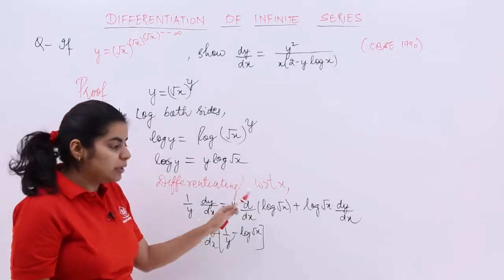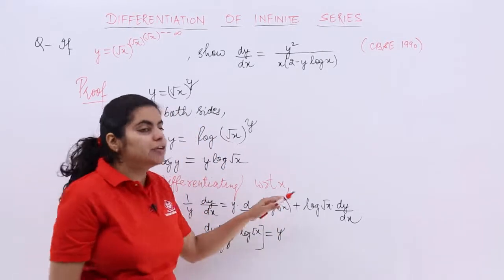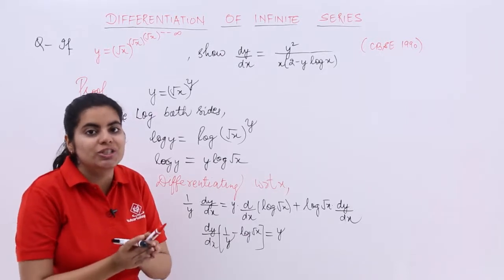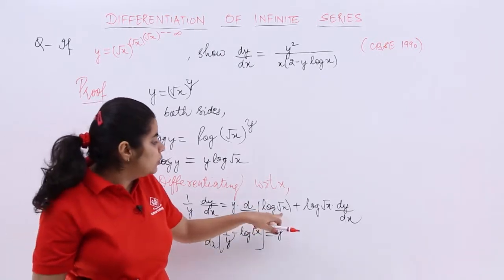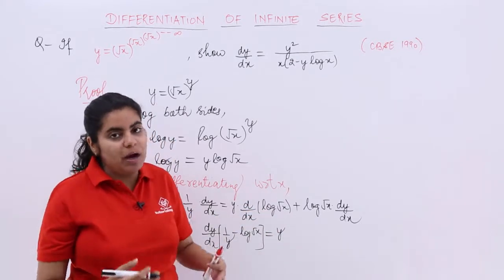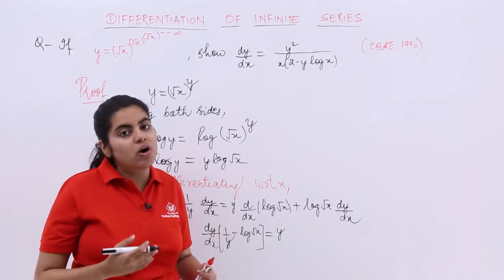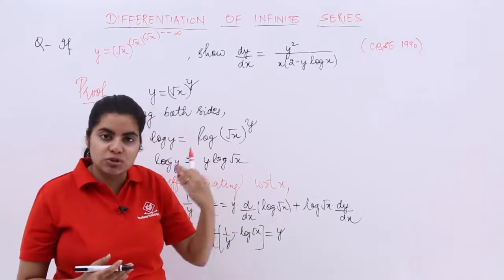And certain things from there also come this side. So it is nothing but minus log root x. And here it becomes what? It is y. What is the differentiation of log root x? Log root x differentiation. Now you know that root x means power 1 by 2.